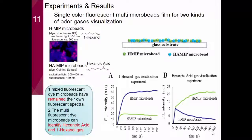In the next experiment, we mix two kinds of MIP microbeads. One type of MIP microbead is designed to detect hexanol, and the other is designed to detect hexanoic acid. From these pictures, we can see the mixed fluorescent dye microbeads retain their own individual fluorescence spectra, and the multi-fluorescent dye microbead can detect two kinds of different odor gases.